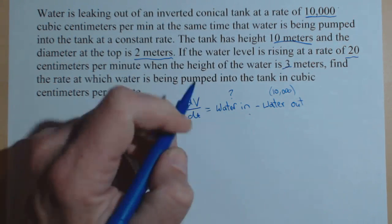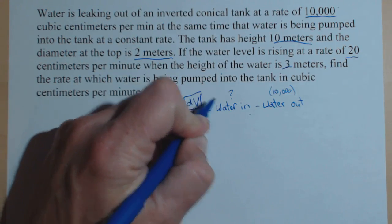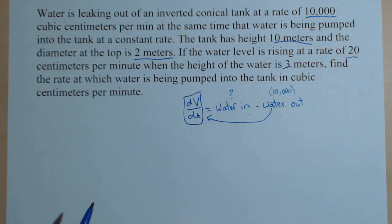how fast is water being pumped in. So basically what we need to do is find our dV/dt and then add the water out to get the rate that the water is being pumped in.